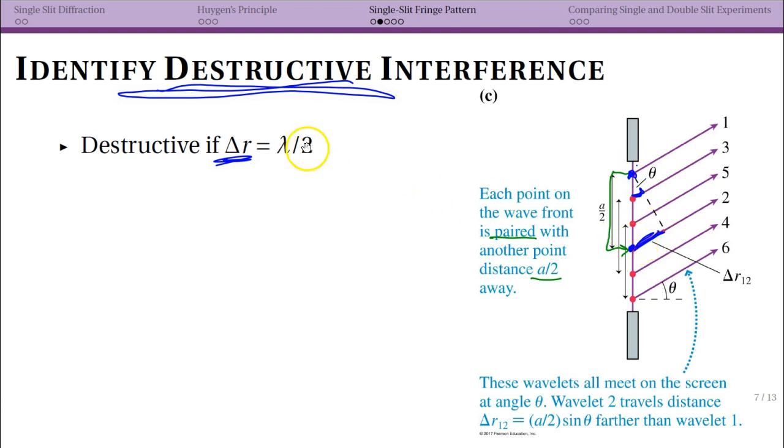This is where it's slightly different from the two-slit interference because we're looking at destructive. Now the other thing to note is right now I'm not putting in an integer—there's an important reason for that—but we're going to really be looking for the first location, the first point where there's destructive interference. So that's why I can say λ/2 rather than like m plus 1/2 λ.